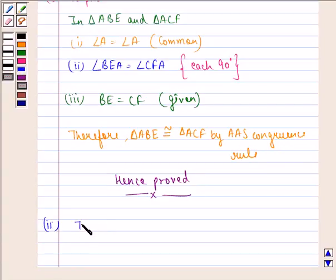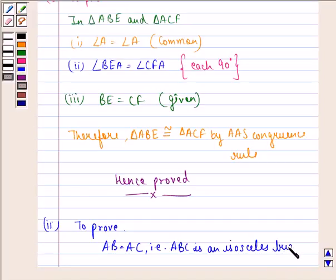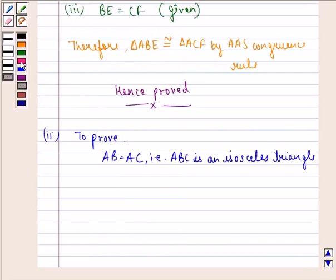We have to prove that AB is equal to AC, that is, ABC is an isosceles triangle. We get AB is equal to AC by CPCT, that is congruent parts of congruent triangles.